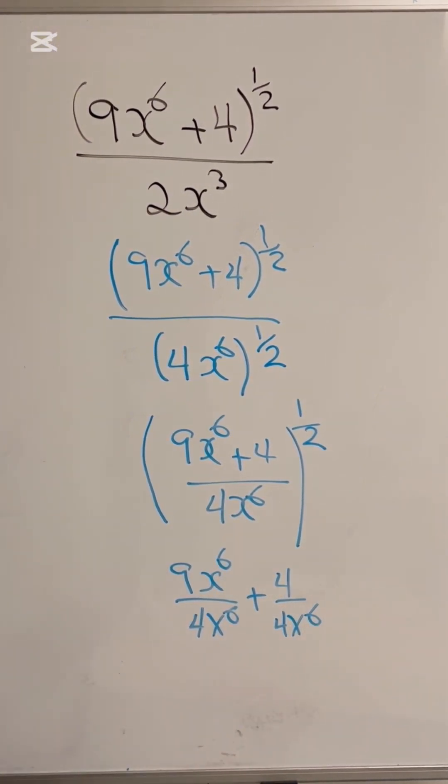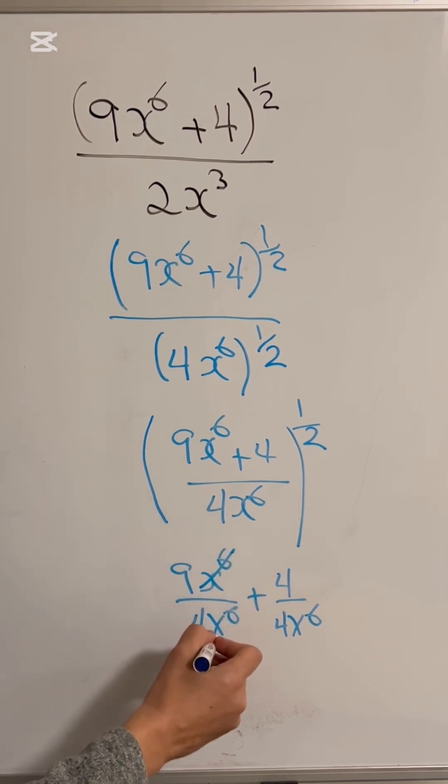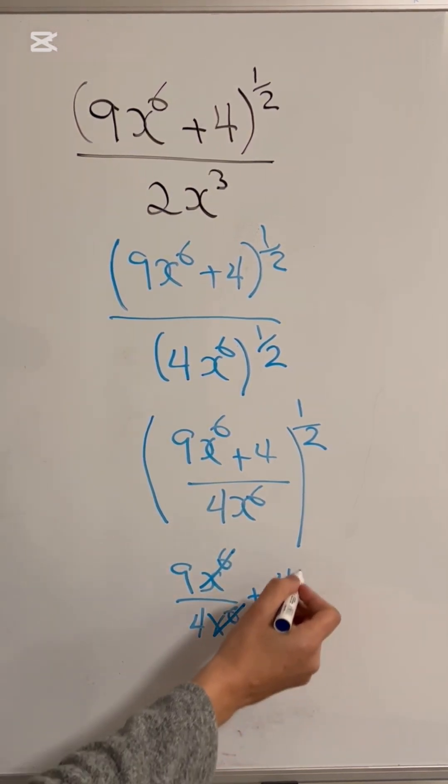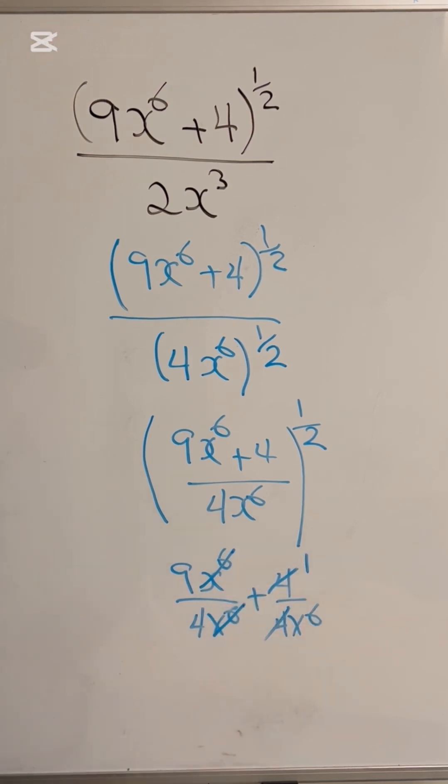The x to the 6 cancel, the 4 here cancels, we end up with 1 on top right here.